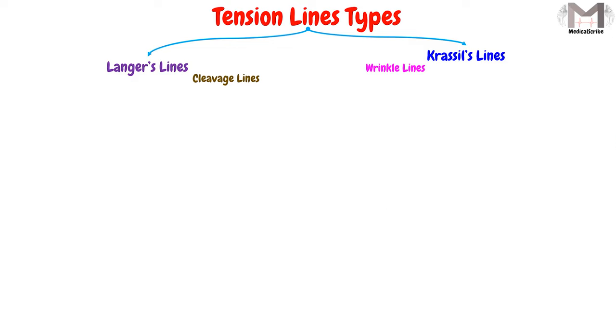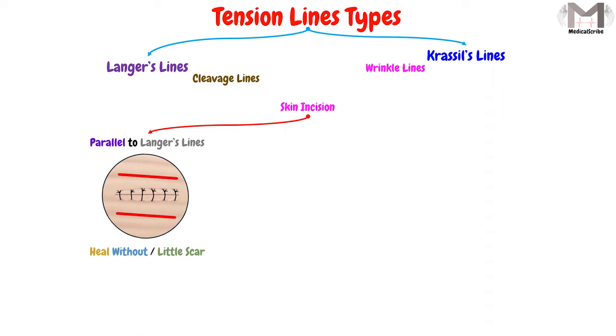And in order to understand why we need these details, it will help us when we need to make a skin incision. If we make an incision, or we have a laceration in a direction parallel to the Langer's lines, the incision will heal without a scar, or with a little scar. That is because, as these incisions run in parallel to the Langer's lines, and these lines are parallel to the collagen fibers, there will be a minimal disruption to these fibers. And as a result, they won't make scars.